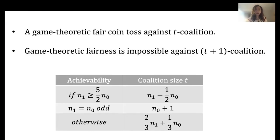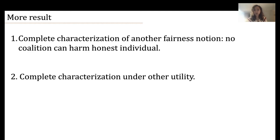To wrap up, in this work we give a game theoretically fair coin toss protocol against a T-sized coalition, and we show that game theoretic fairness is impossible against any T-plus-one-sized coalition. T is summarized in the table: N1 is the number of cake people and N0 is the number of sushi people. When N1 is much larger than N0, we can tolerate a coalition of size up to N1 minus half N0. Moreover, if N1 equals N0 and they are equal and odd, we can tolerate an N0-plus-one-sized coalition, as in the six-player example. We also give a complete characterization of another fairness notion requiring that no coalition can harm any honest individual, and complete characterizations of these two fairness notions under other natural utility functions.